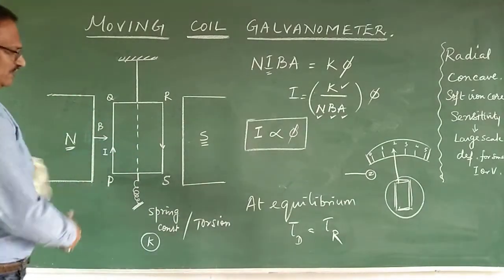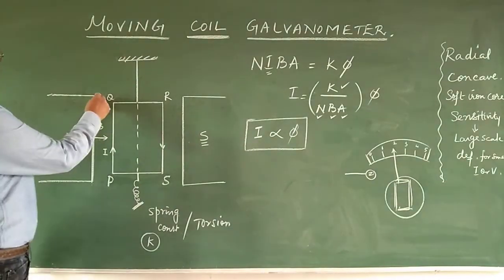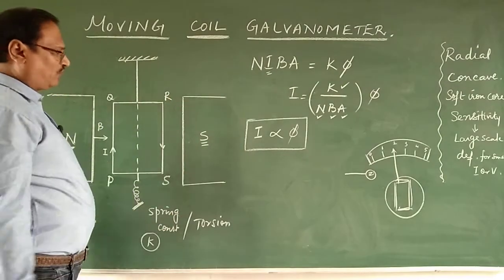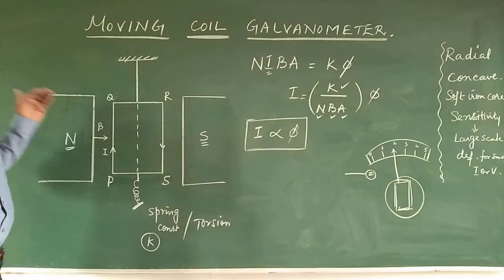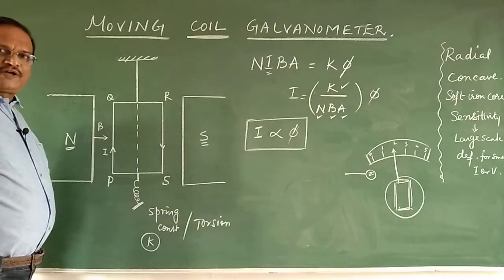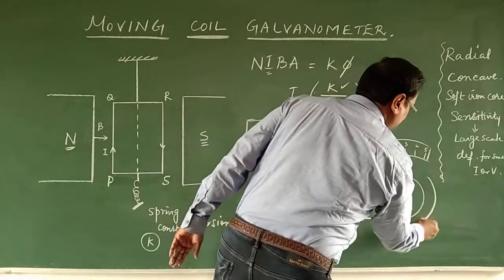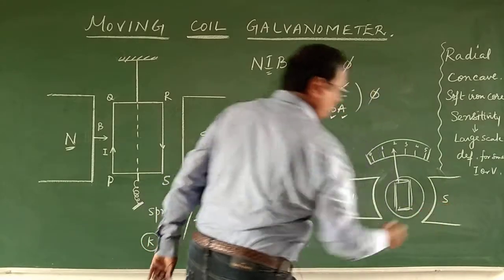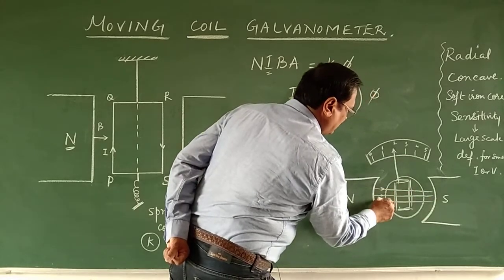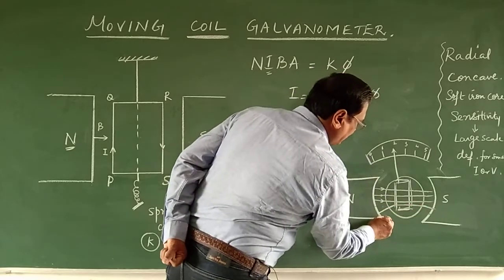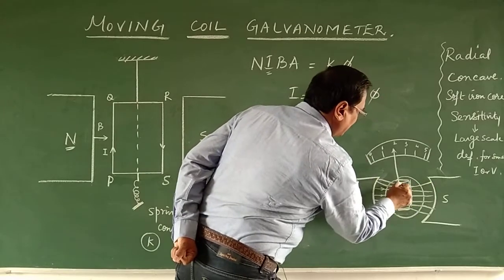To make the galvanometer more effective, we need to concentrate the magnetic field onto the coil. If the magnet is flat, edge effects cause the field to be non-uniform. So we use concave-shaped magnets — north pole and south pole both concave-shaped. This causes all magnetic field lines to become radial, producing a radial magnetic field.